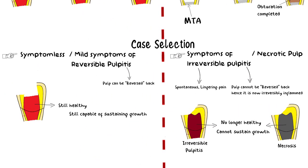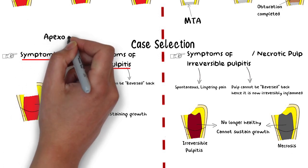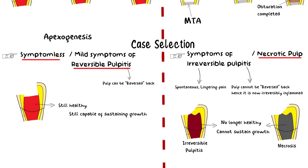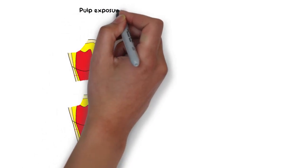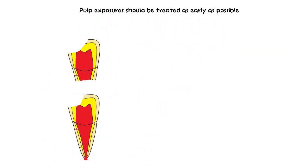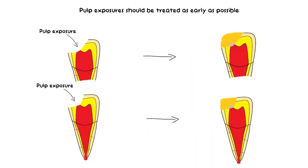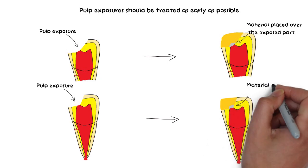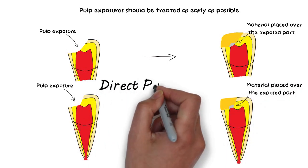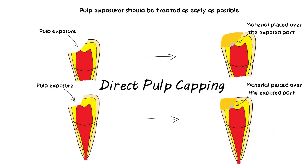To summarize case selection: a tooth which was healthy and symptomless prior to pulpal exposure, or had mild symptoms of reversible pulpitis, is the ideal case for Apexogenesis. While a tooth having a necrotic pulp or symptoms of irreversible pulpitis should be treated with Apexification. It is also recommended that any pulpal exposure ideally be treated as early as possible. A small exposure can be treated with direct pulp capping, in which MTA is directly placed over the small exposed part, avoiding the need for pulp removal and Apexogenesis.